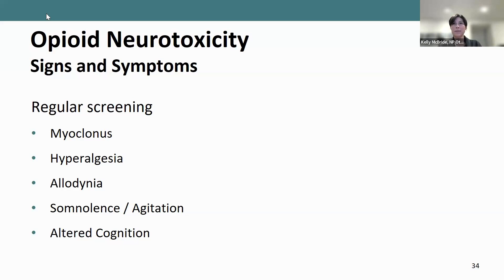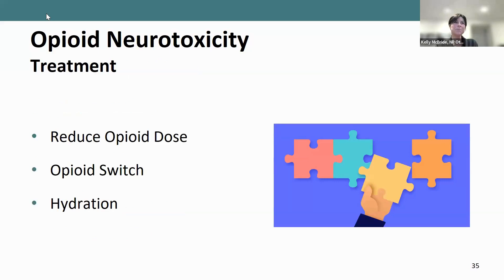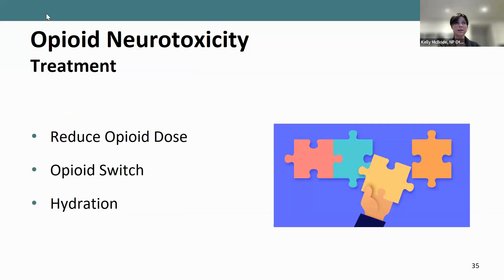Managing opioid neurotoxicity includes reducing the opioid dose, switching the opioid — for example moving from morphine to hydromorphone or vice versa — and hydration, which can help in some cases. If an opioid switch is required, dose calculations are needed, and our team can help support that.